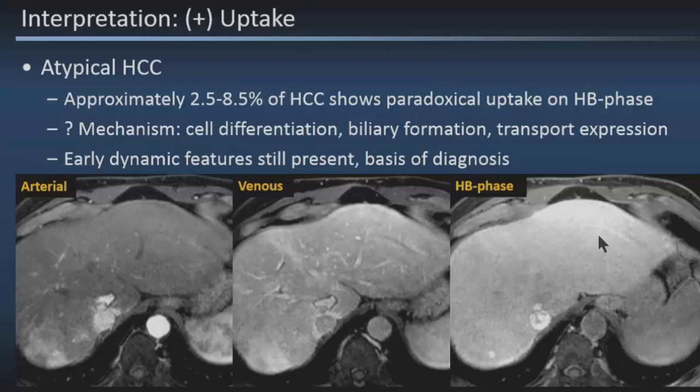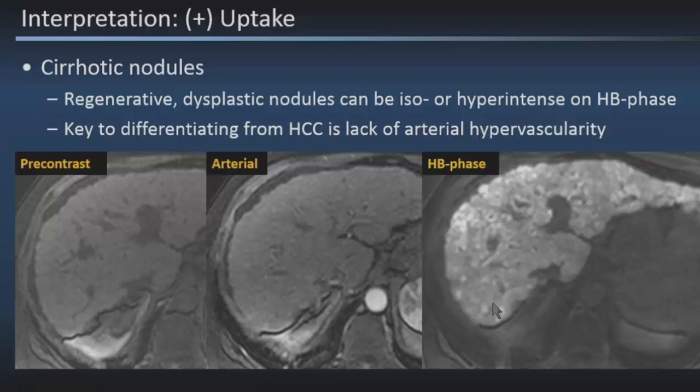Cirrhotic nodules have a tendency to sometimes show up as hyperintense on the hepatobiliary phase. The key is the lack of arterial hypervascularity, which sets them apart from a dysplastic or HCC-type lesion. Here we can see multiple lesions that are hyperintense on the hepatobiliary phase images, but with no corresponding arterial hyperenhancement. These were called cirrhotic nodules and have been stable on several subsequent studies.